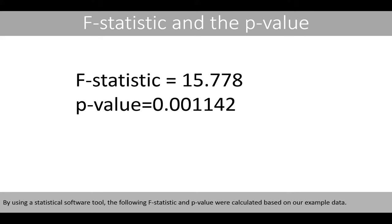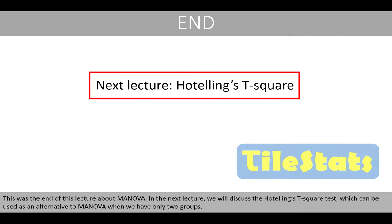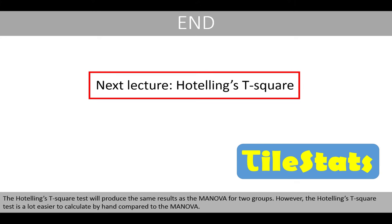By using a statistical software tool, the following F statistic and p-value were calculated based on our example data. This was the end of this lecture about MANOVA. In the next lecture, we'll discuss the Hotelling's T-squared test, which can be used as an alternative to MANOVA when we have only two groups. The Hotelling's T-squared test will produce the same results as MANOVA for two groups. However, the Hotelling's T-squared test is a lot easier to calculate by hand compared to MANOVA.